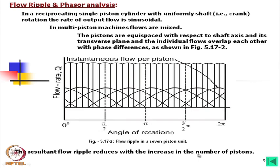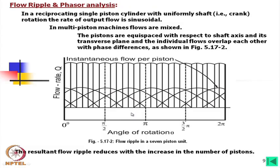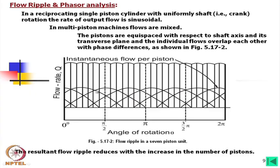The resultant flow ripple reduces with increasing number of pistons. For a single piston, delivery occurs only in half the cycle. When multiple pistons are mixed, when one piston is in suction mode, other pistons are in compression mode and delivering oil. So the ultimate flow ripple is a fluctuating curve — and with increasing number of pistons, that fluctuation decreases.